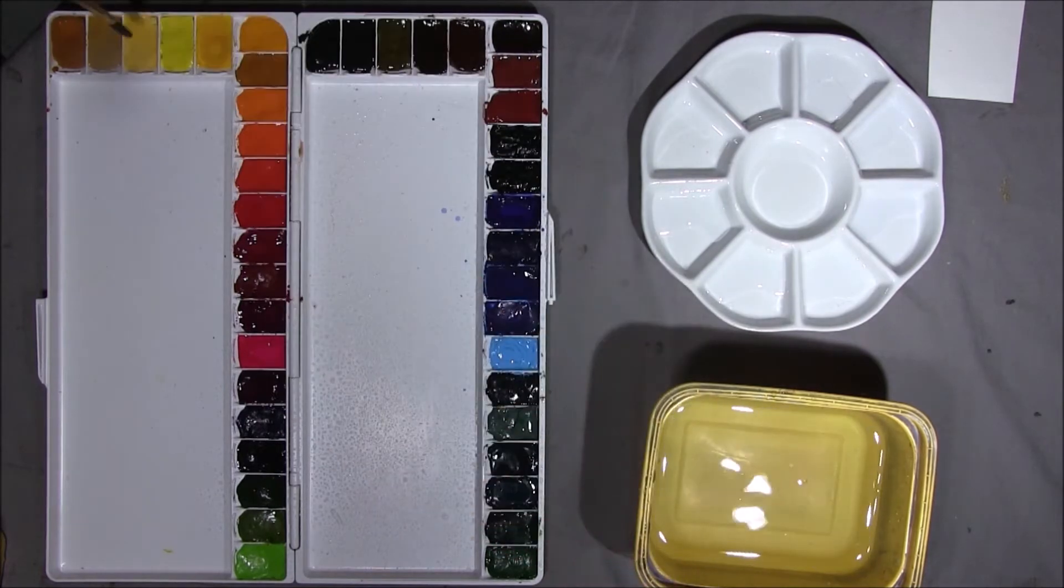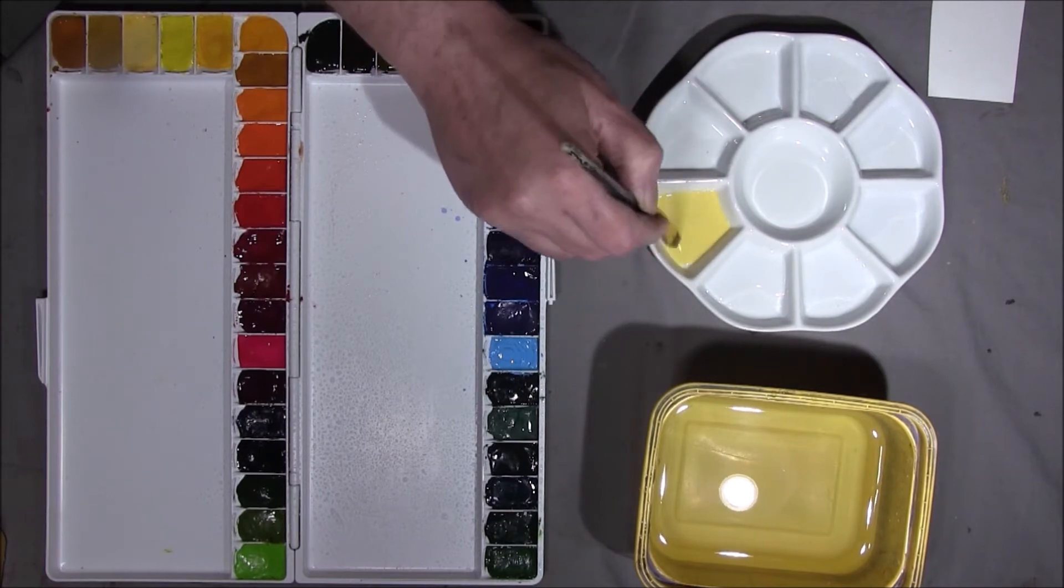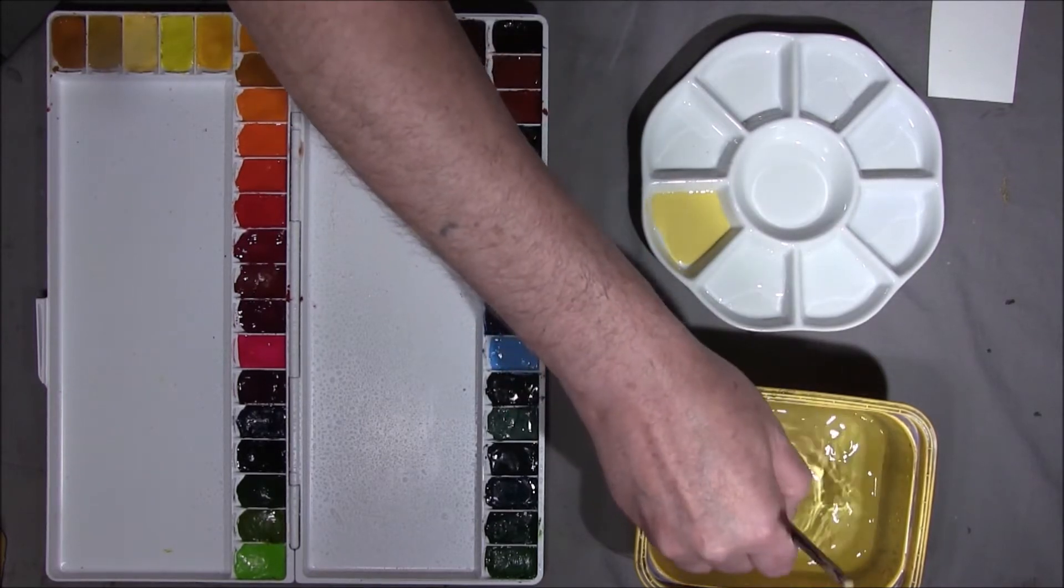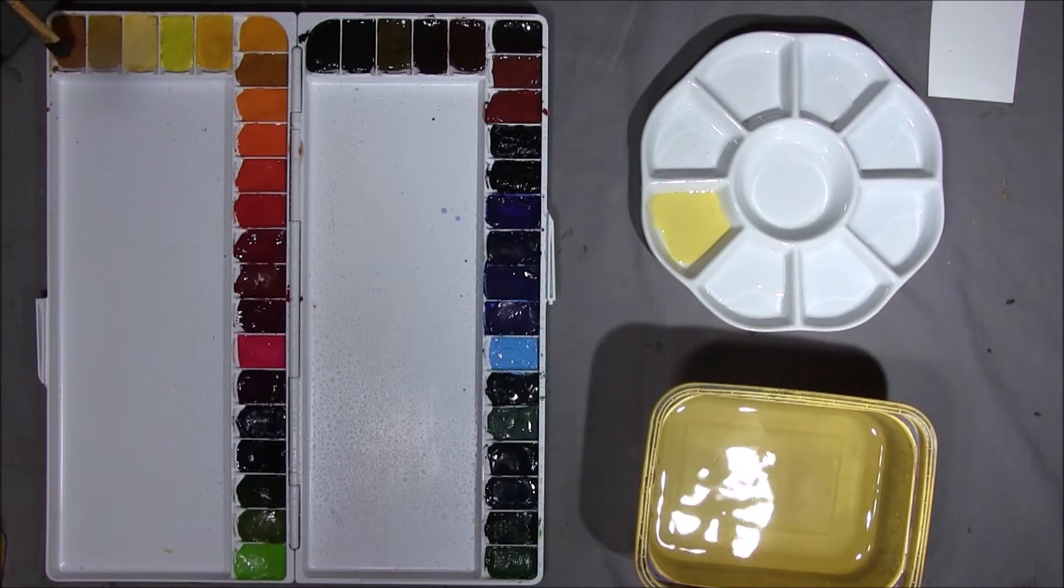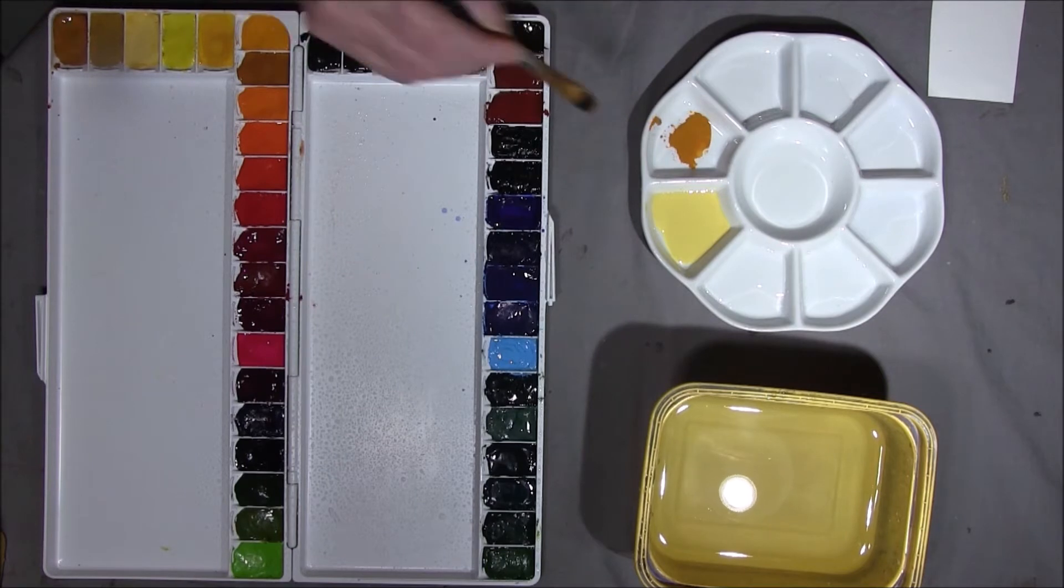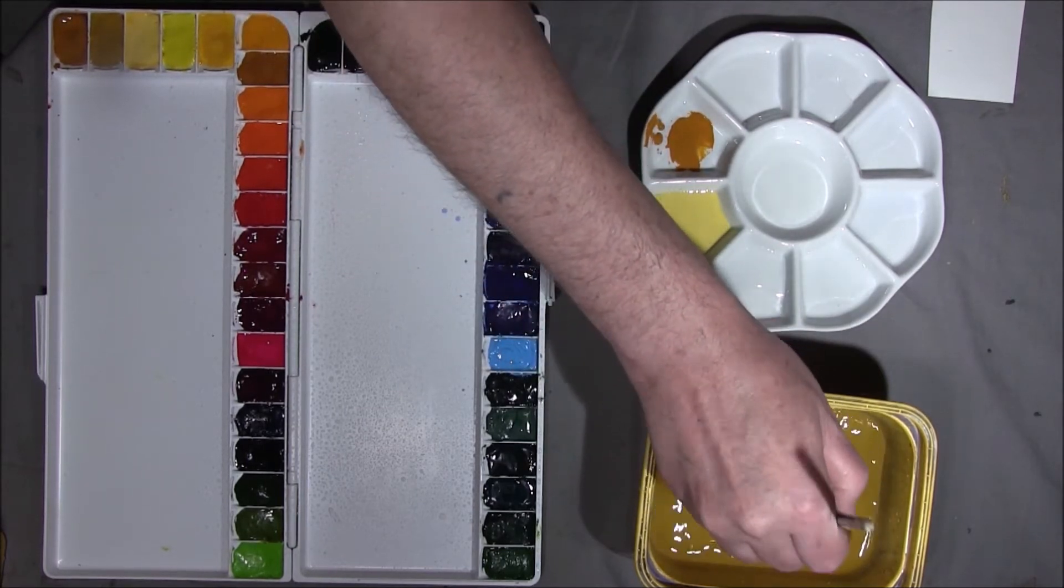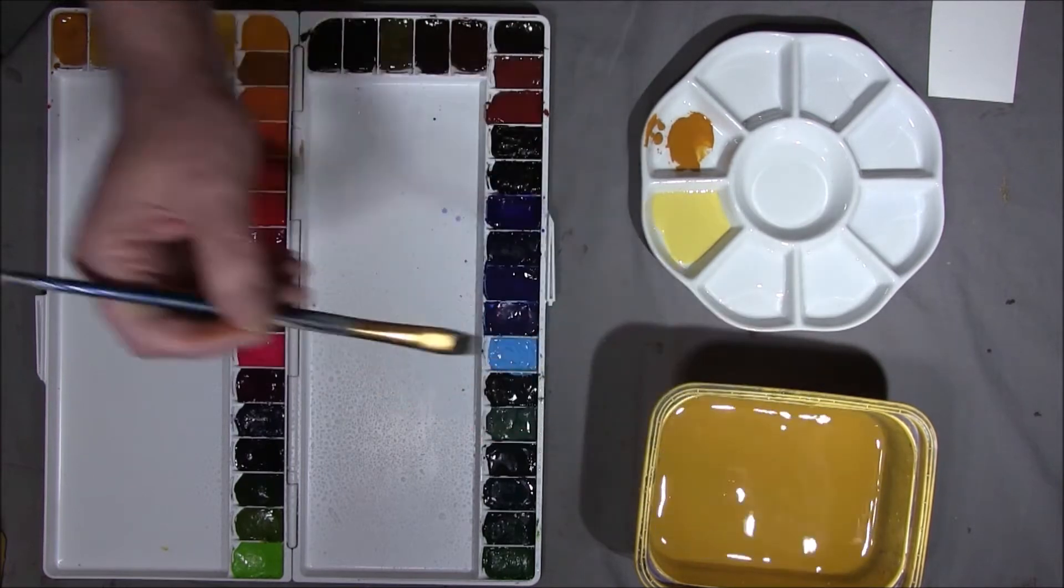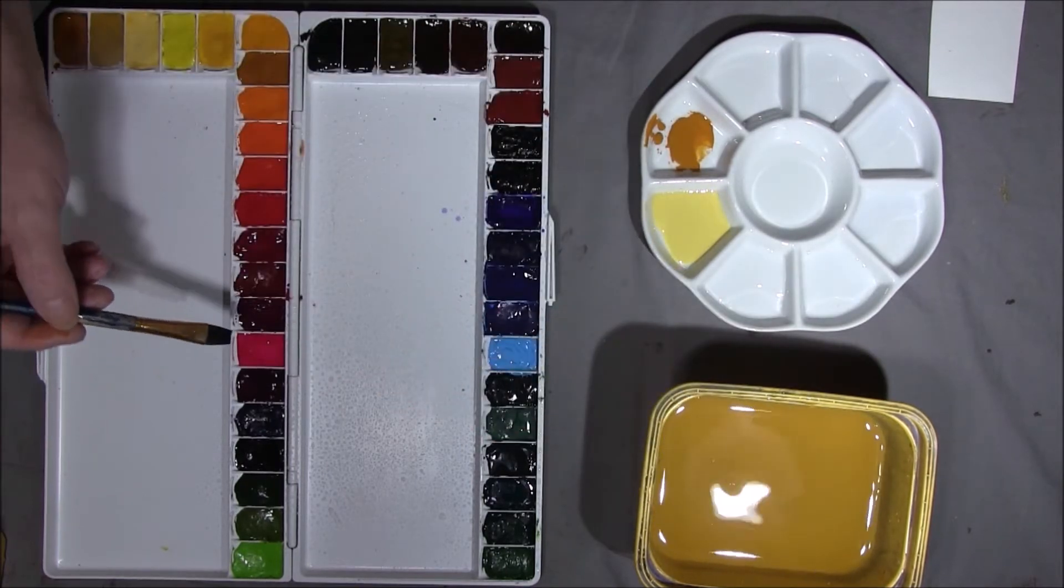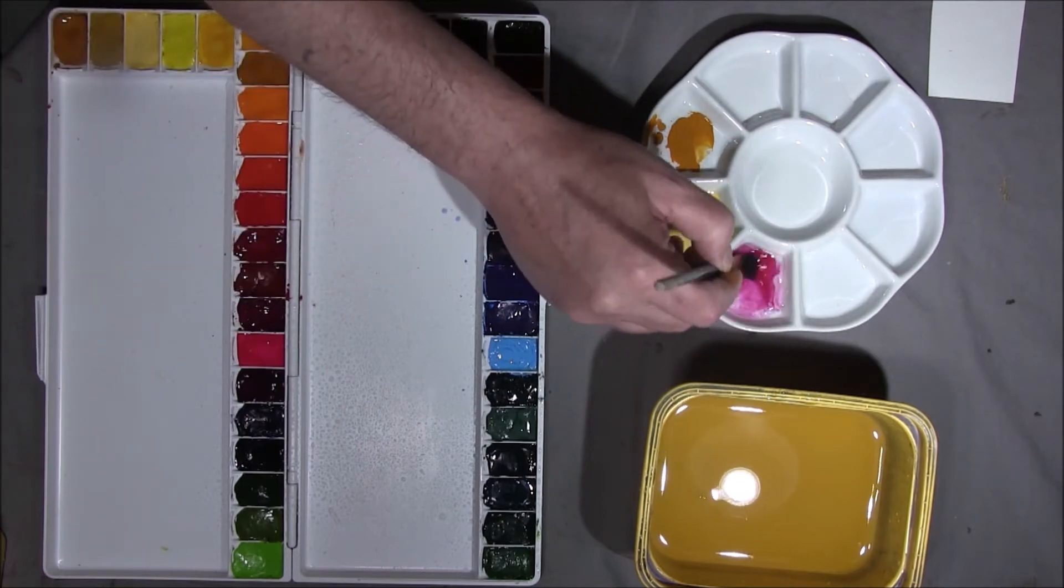I think in the sky we'll have some Naples Yellow—it's normally a good all-rounder. I'm just going to drop a little bit of raw sienna into this palette, quite thick. Then I'm going to take some Crimson Lake for a weak wash in the sky.